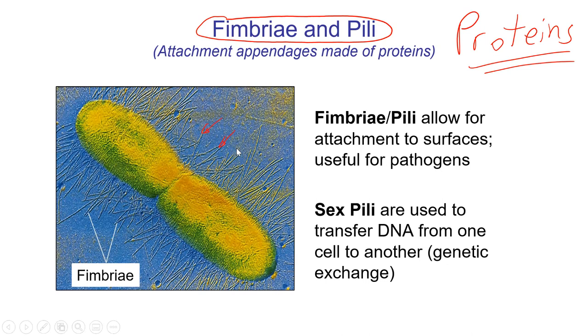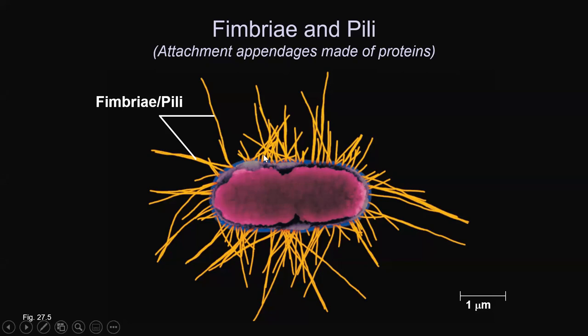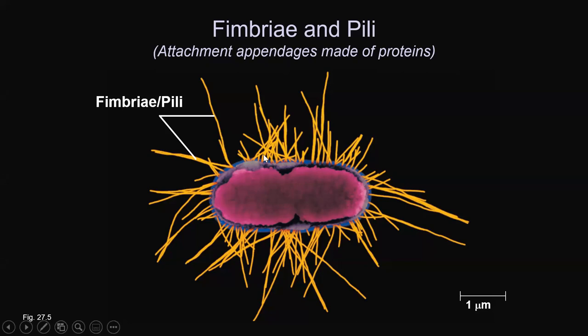I'll talk about the sex pili in a minute, but here's a really nice electron micrograph — it looks like E. coli there, dividing as well. Very cool image.